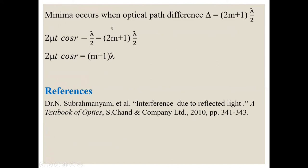Minima occurs when optical path difference delta is equal to 2m plus 1 lambda by 2. So if this path difference 2 mu t cos r minus lambda by 2 is 2m plus 1 lambda by 2, we get minimum. So finally 2 mu t cos r equals m plus 1 lambda is condition for darkness.